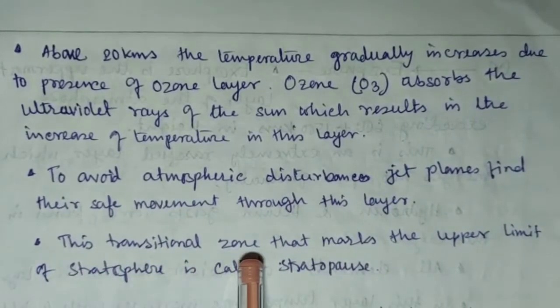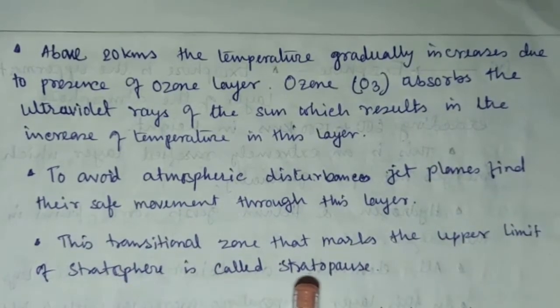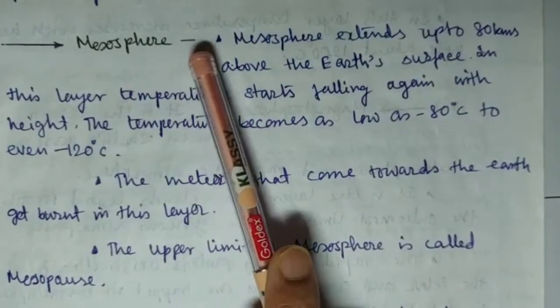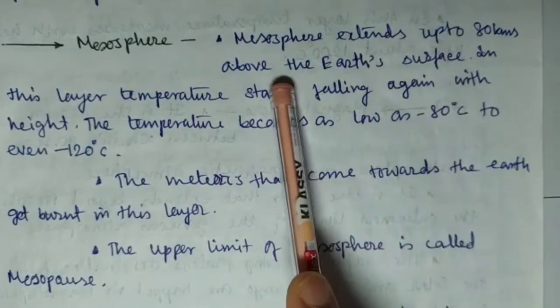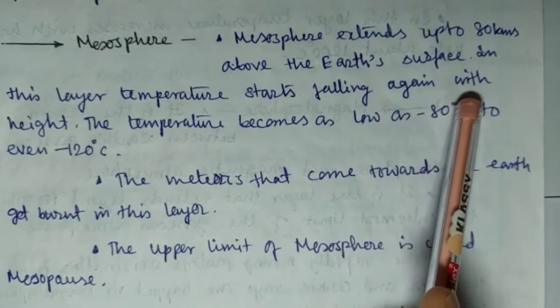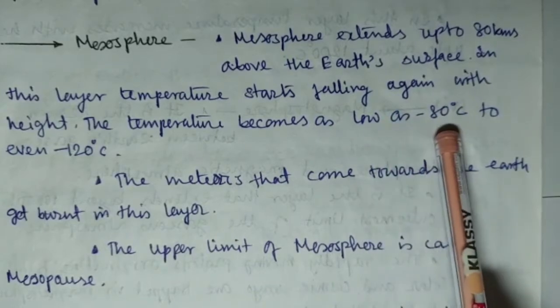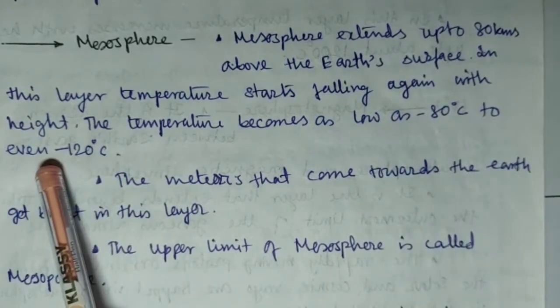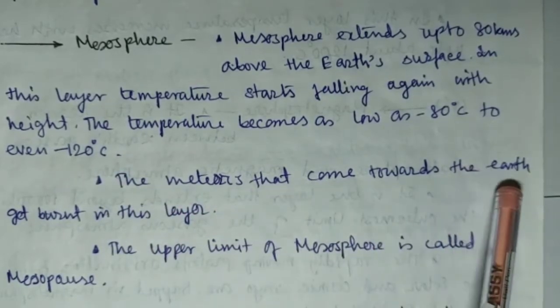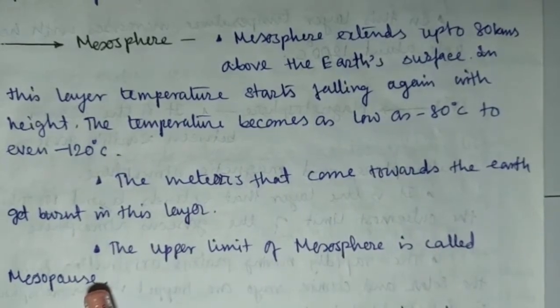This transitional zone that marks the upper limit of stratosphere is called the stratopause. Mesosphere extends up to 80 kilometer above the earth's surface. In this layer, temperature started falling again with height. The temperature becomes as low as minus 80 degree centigrade to even minus 120 degree centigrade. The materials that come toward the earth get burned in this layer. The upper limit of mesosphere is called mesopause.